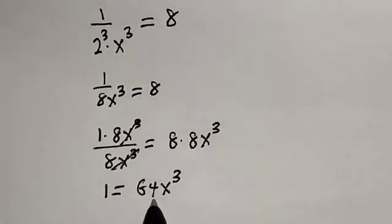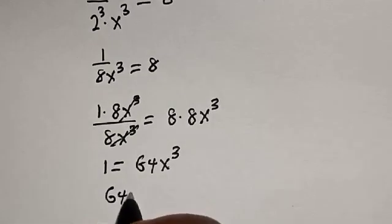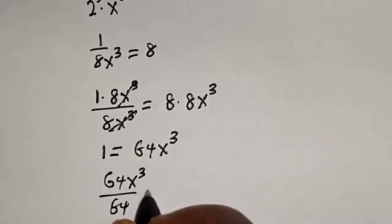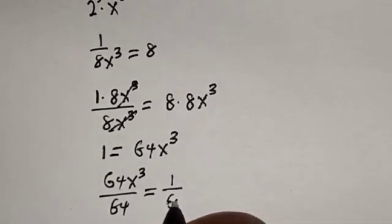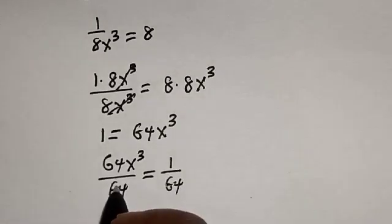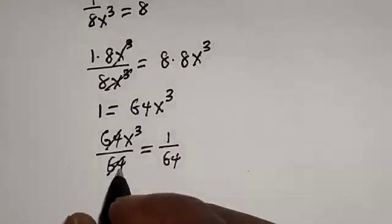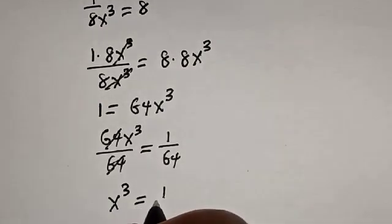Now let's divide both sides by 64. We have 64x raised to the power of 3 divided by 64 is equal to 1 divided by 64. This one will cancel this, and x raised to the power of 3 is equal to 1 over 64.